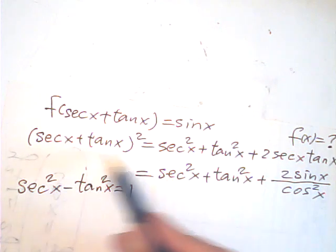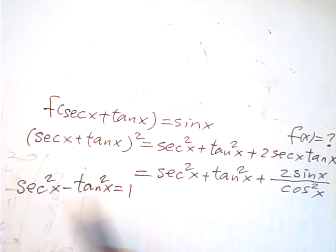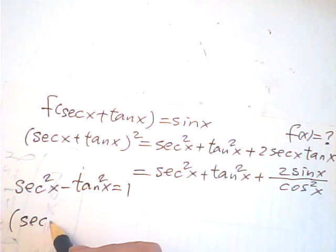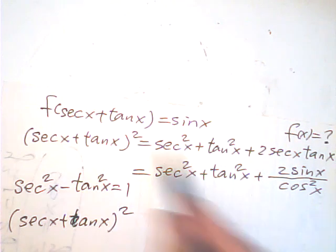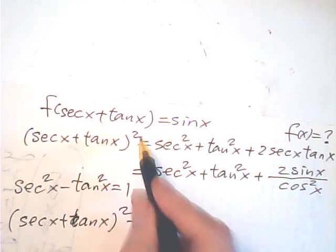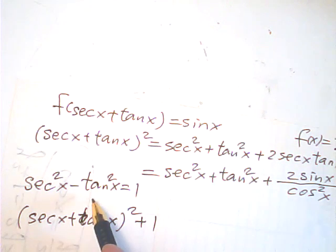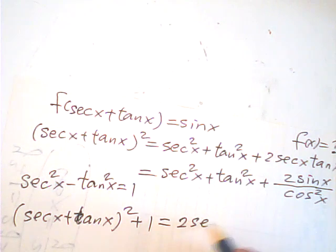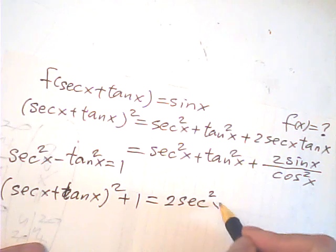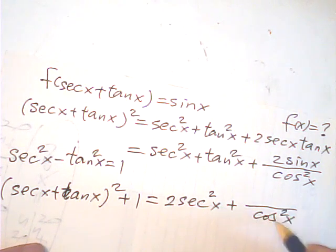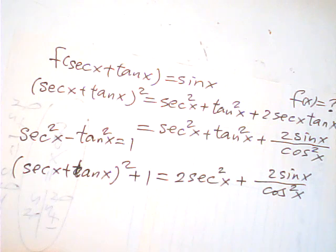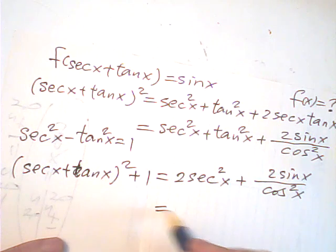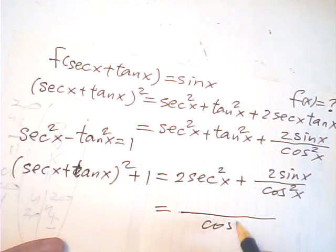So adding 1 to both sides: (sec x + tan x)² + 1 equals sec²x + tan²x + 2·sin x + sec²x − tan²x. So the tangent squared terms cancel. It becomes 2·sec²x + 2·sin x.